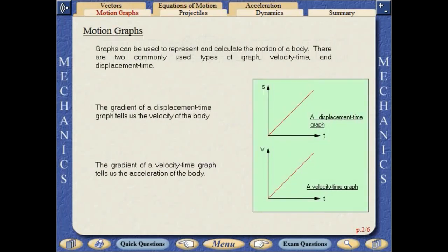Graphs can be used to represent and calculate the motion of a body. There are two commonly used types of graph: velocity-time and displacement-time. The gradient of a displacement-time graph tells us the velocity of the body. The gradient of a velocity-time graph tells us the acceleration of the body.